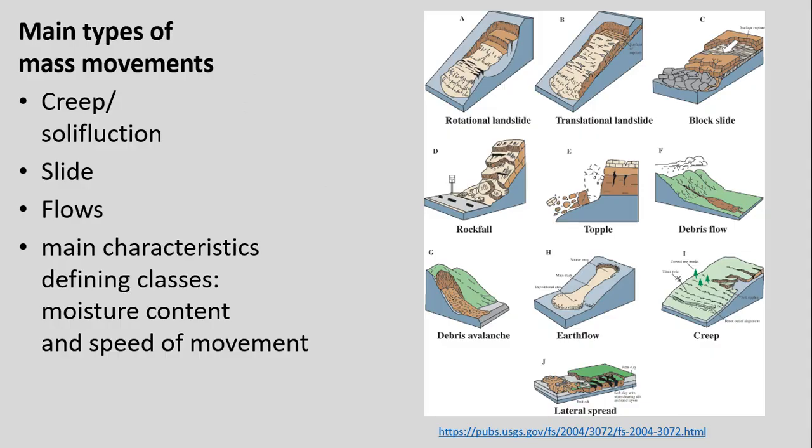There are many different main types of mass movements. The main characteristics that define the classes are moisture content and the speed of movement — those are the two main things defining all these different classes. Is it dry or is it more wet? And does it move slowly or does it move really fast? Those are the two axes that determine all these different classes.